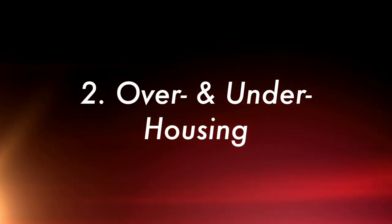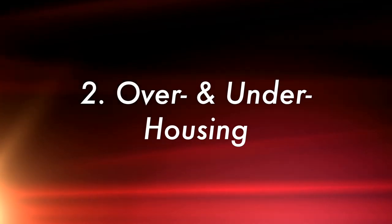Second is over and under housing. If you have residents that lived on your property for 15 years, they may have had a three or four bedroom unit. They've downsized — the kids have gotten older, they moved on, and mom's still stuck in a four or five bedroom unit. But guess what? HUD's still paying the subsidy for a four or five bedroom unit.